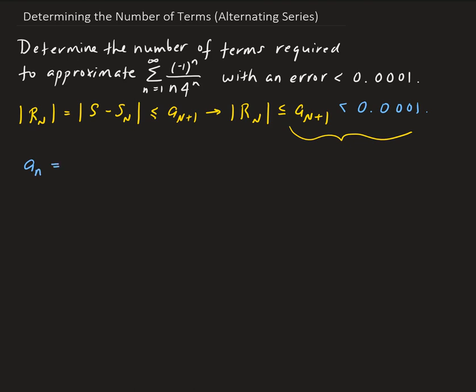The nth term, because this is an alternating series, is just 1 over n times 4 to the n. We don't include the (-1) factor because it's alternating — we're only interested in the positive terms. Taking the absolute value of the nth term with the (-1)^n gives exactly 1 over n·4^n. So the (n+1)th term will be 1 over (n+1) times 4 to the (n+1).